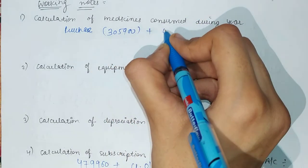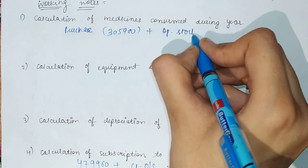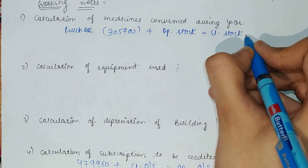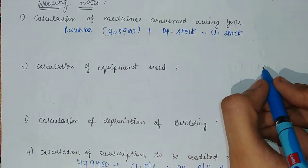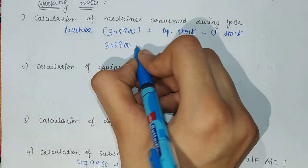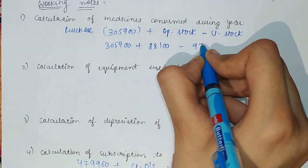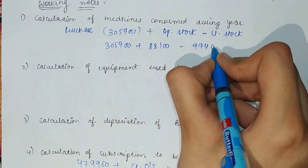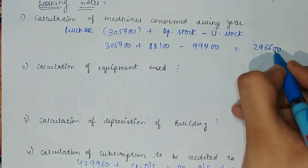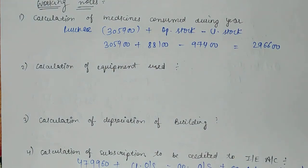Now for medicines, the opening stock is added so that it is treated as used in the current year, and the closing stock is deducted so that it is kept for next year. So: opening stock $305,900 is added, purchase amount $88,100 is added, and closing stock of $97,400 is deducted. The medicines consumed amount coming out is $296,600.